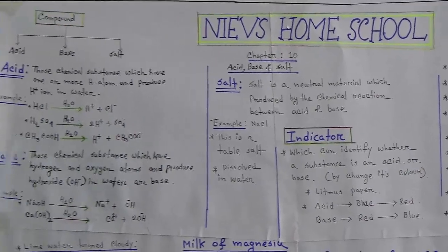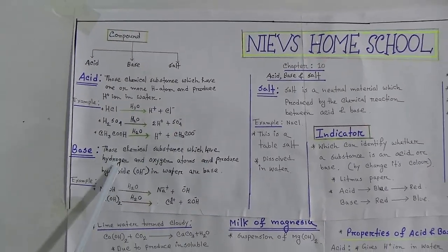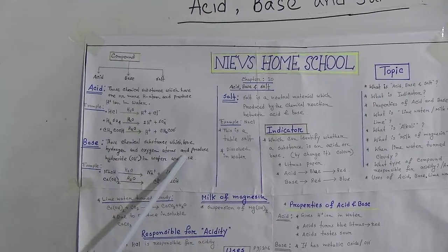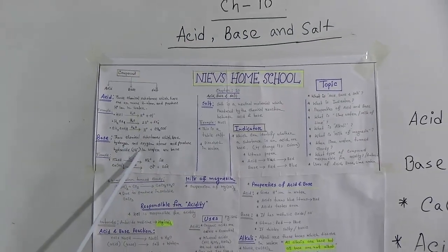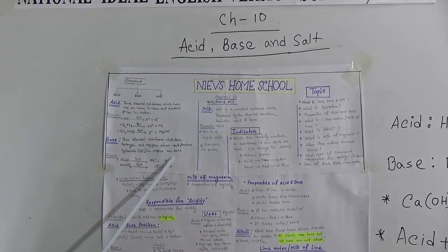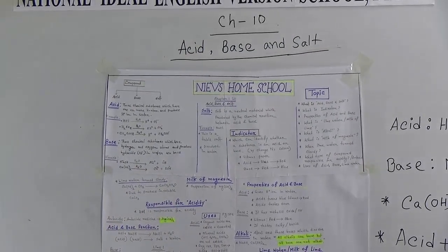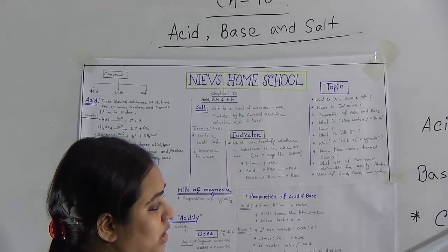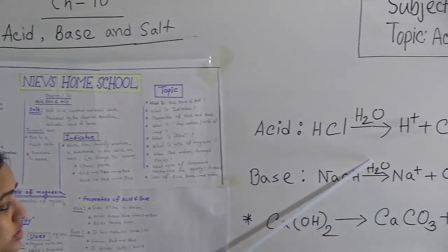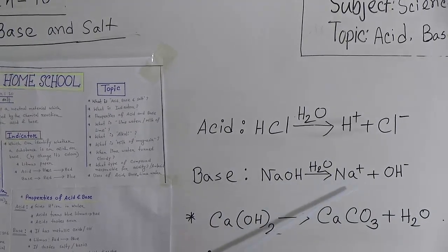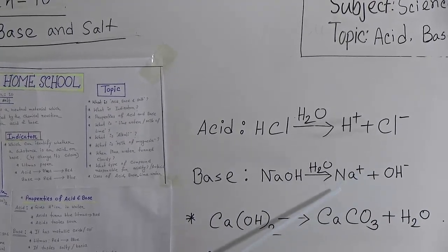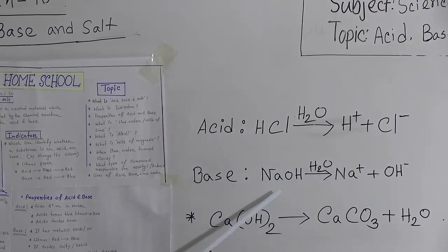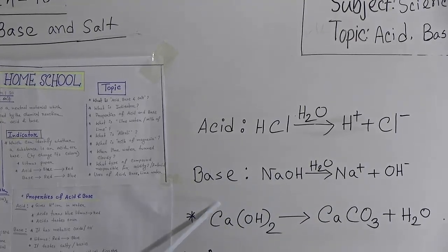Now the second topic is what is base. Base is those chemical substances which have hydrogen and oxygen atoms and produce hydroxide ions in water. For example, sodium hydroxide — when we put sodium hydroxide in water, it releases hydroxide ions and also produces sodium ions. That means sodium hydroxide is a base.